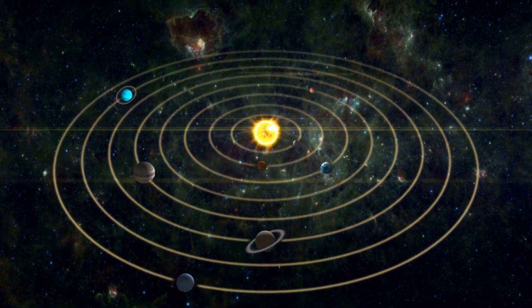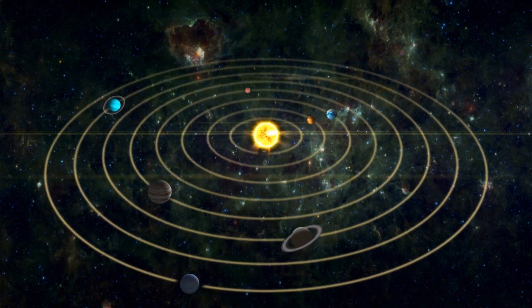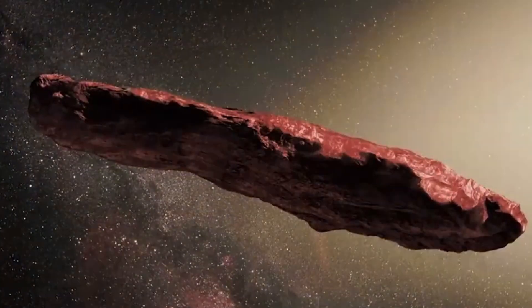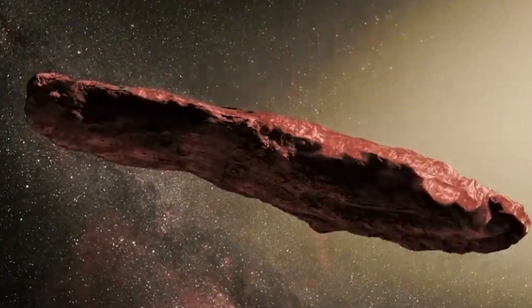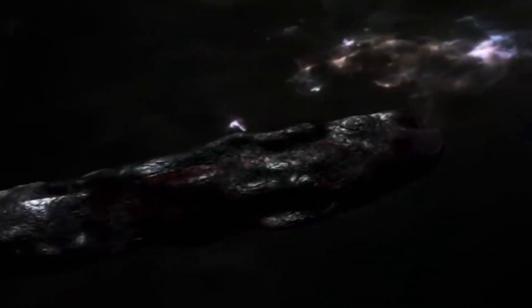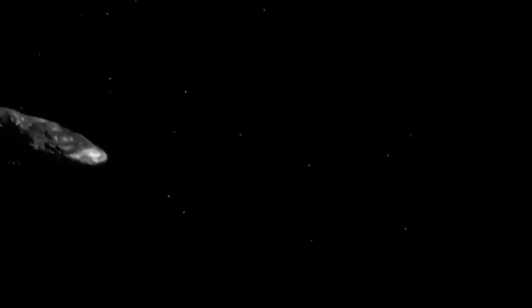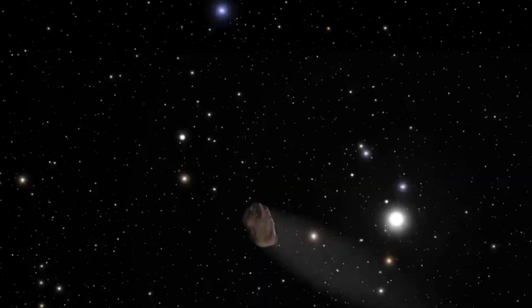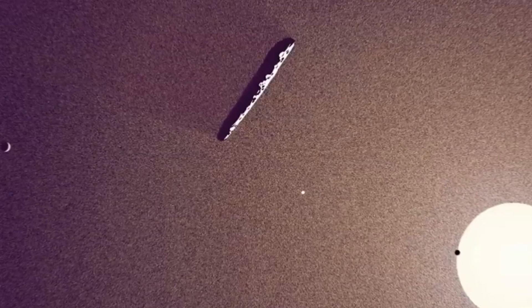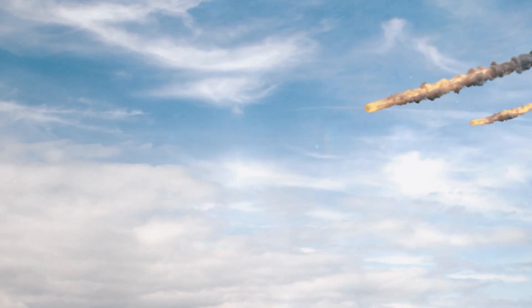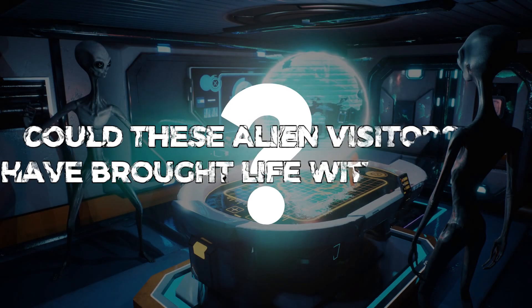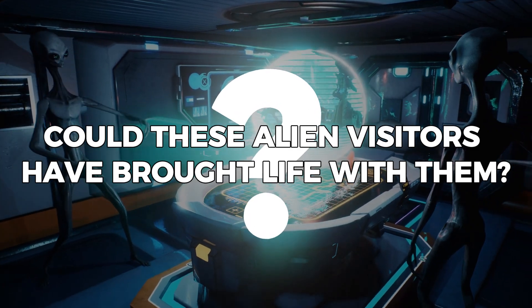Astronomers first spotted this strange visitor from beyond our solar system in 2017. Known as 1I/2017 U1 Oumuamua, it caused quite a stir among scientists. Its detection hinted at a fascinating possibility: that objects from other stars sometimes journey through our neighborhood, and some might even crash into Earth as meteorites. This raises a big question: Could these alien visitors have brought life with them?